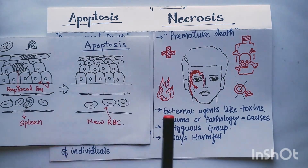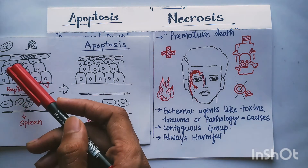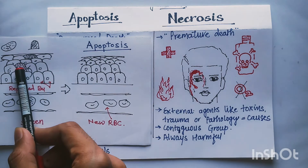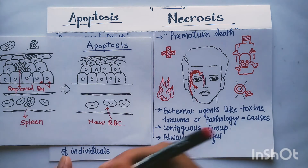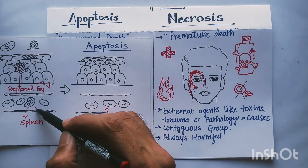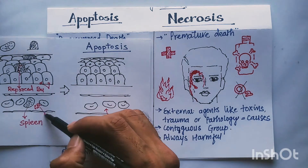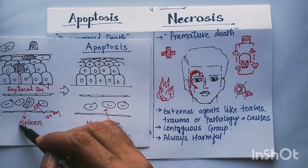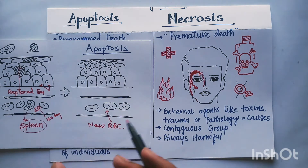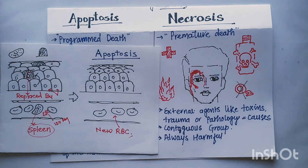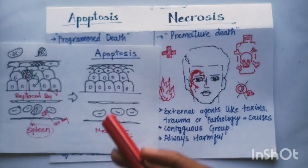We will understand this with a simple diagram. In this diagram, this is epithelium and this is a blood vessel. In epithelium, cells get divided every day. An old cell needs to die and is replaced by a natural and healthy cell. Similarly in a blood vessel, RBCs have a lifetime of 120 days. After 120 days, they are sent to the spleen where they are destroyed, and new RBCs take the place of old ones. This is an example of apoptosis.